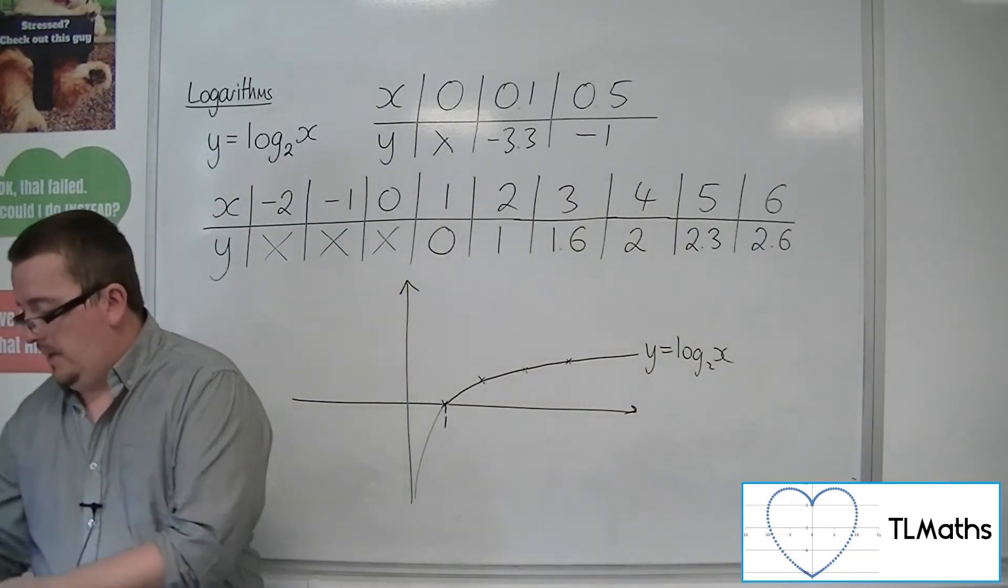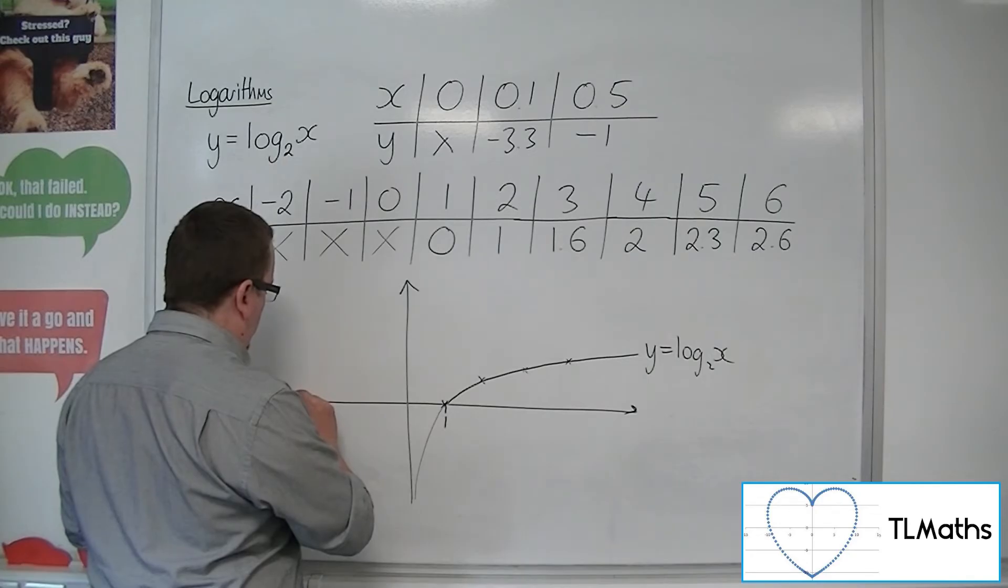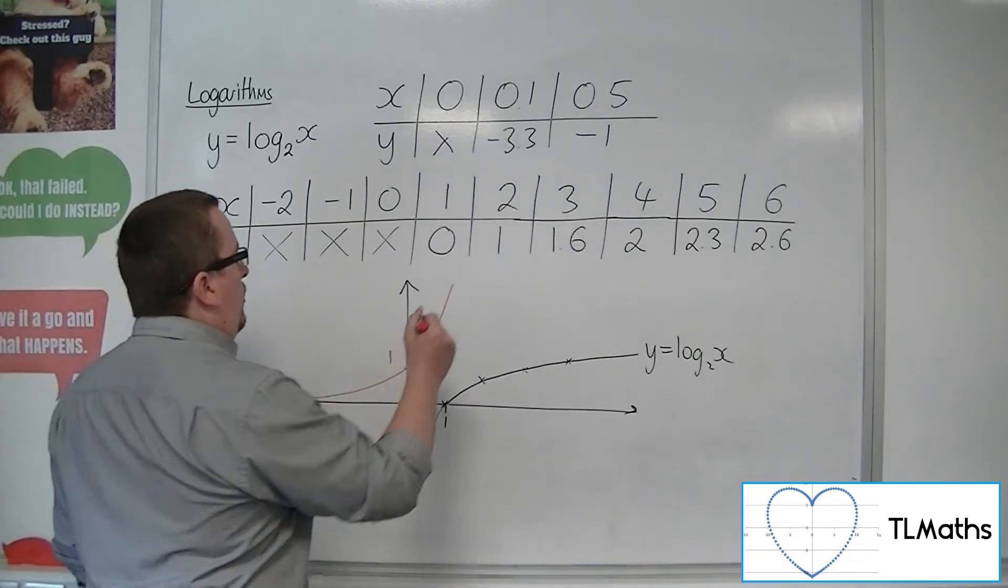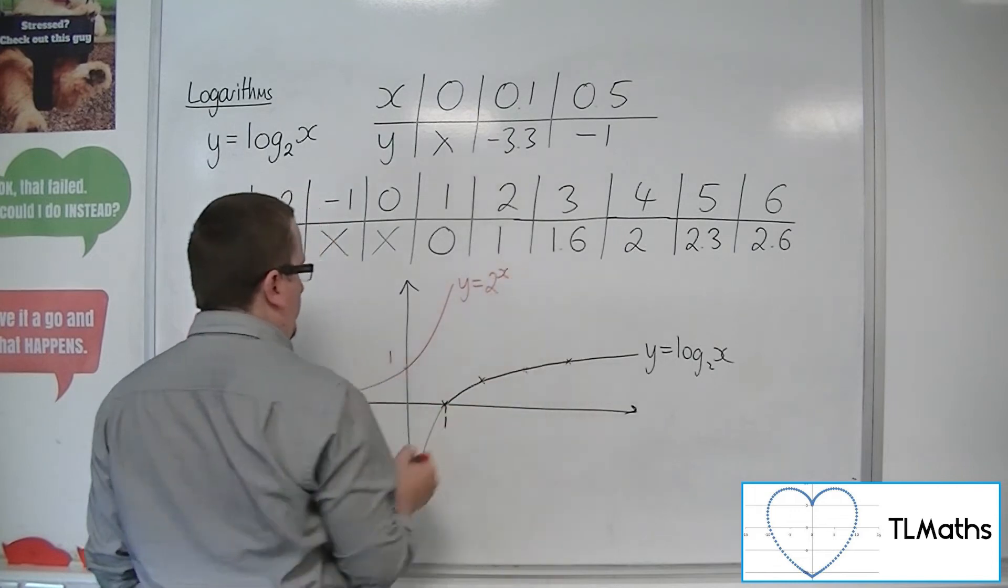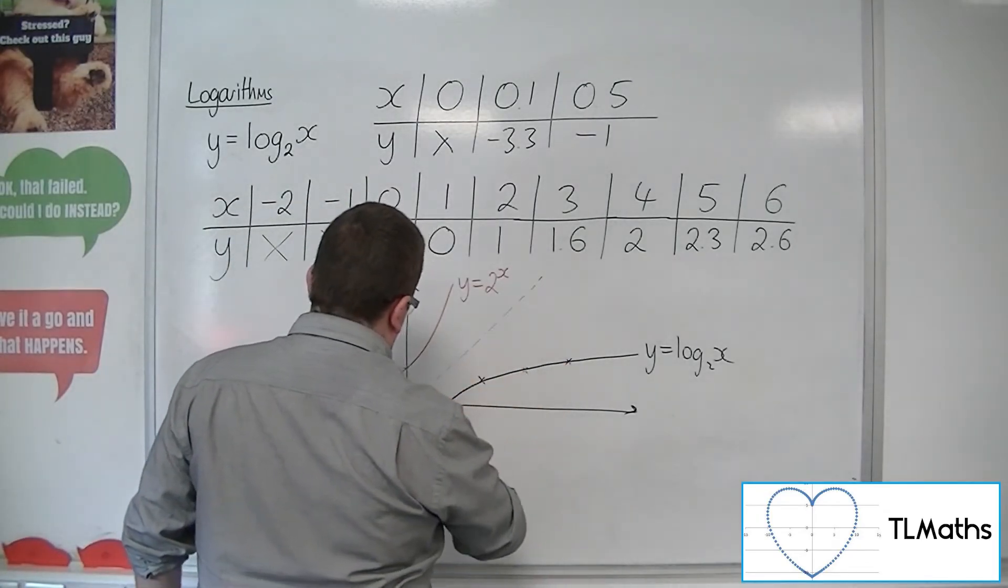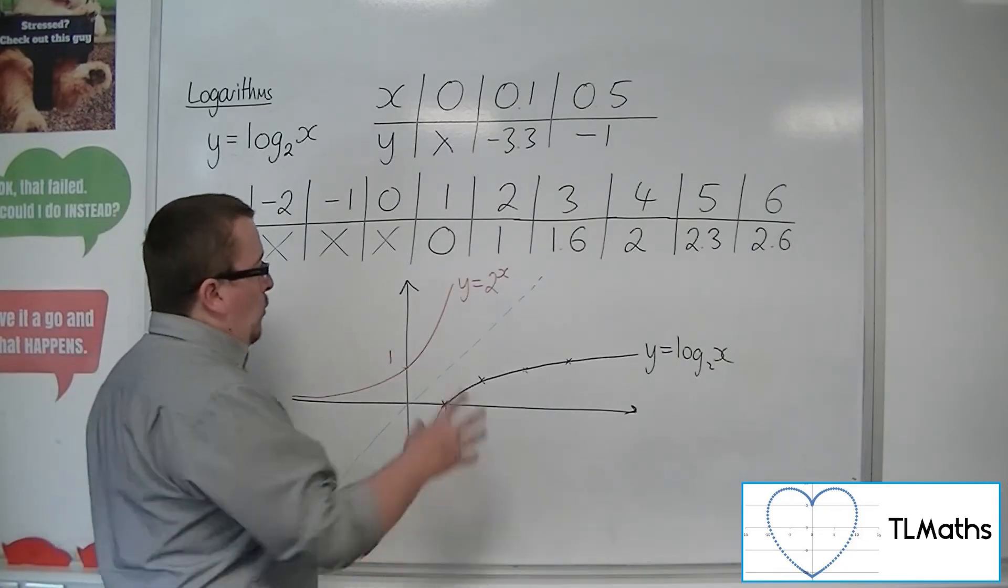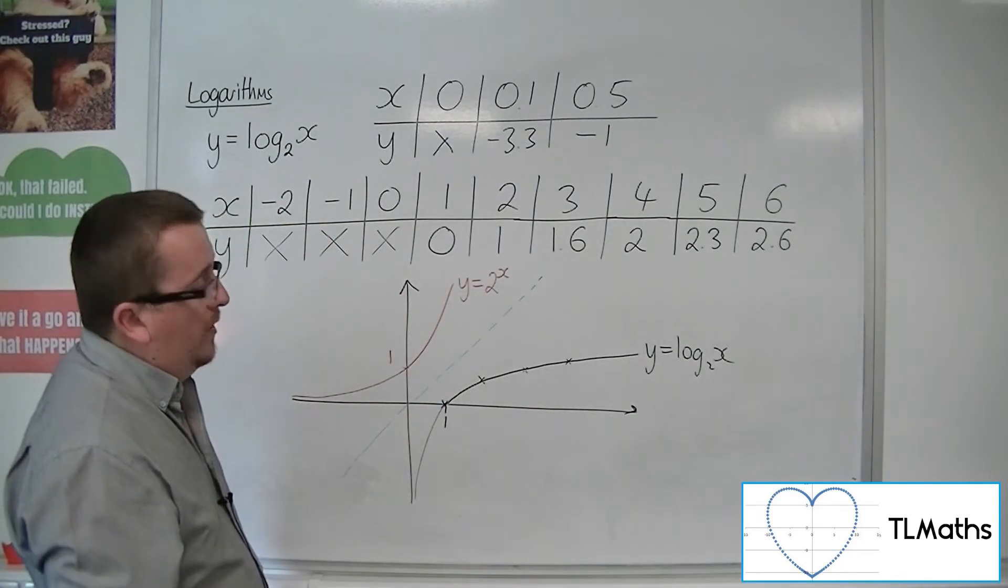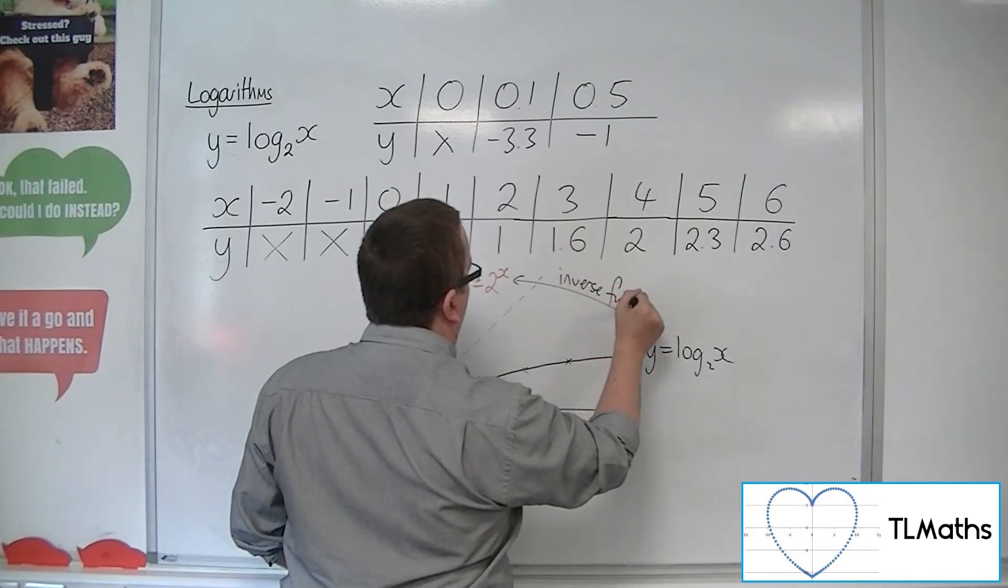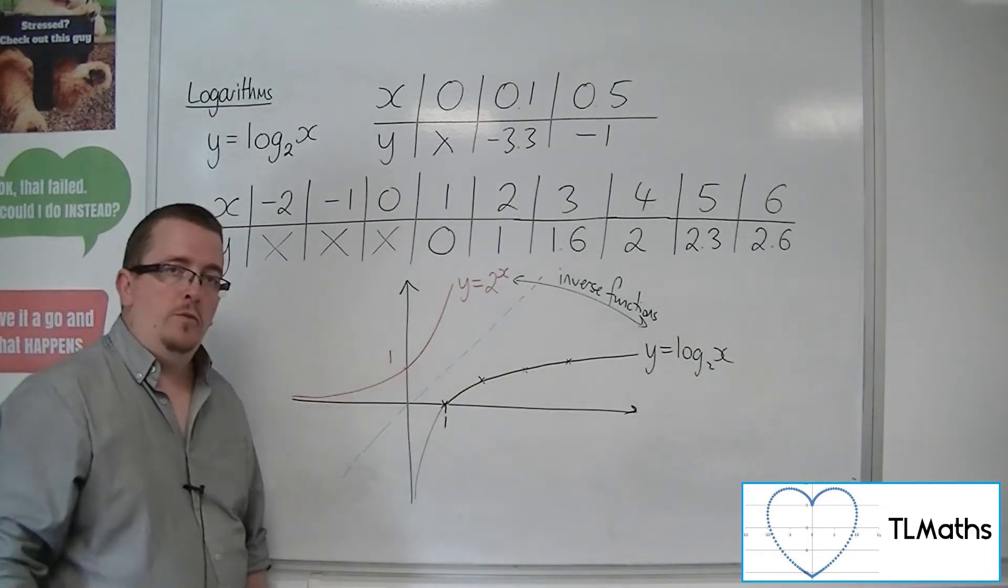And really you should be looking at that and thinking, hang on a minute, I've seen something like that before. Because it looks funnily similar to y equals 2 to the x. In fact, it almost looks like you could hold up a mirror. Okay, and that is the case. y equals 2 to the x, y equals log base 2 of x are what is referred to as inverse functions of one another. Because they have this symmetry through the line y equals x.